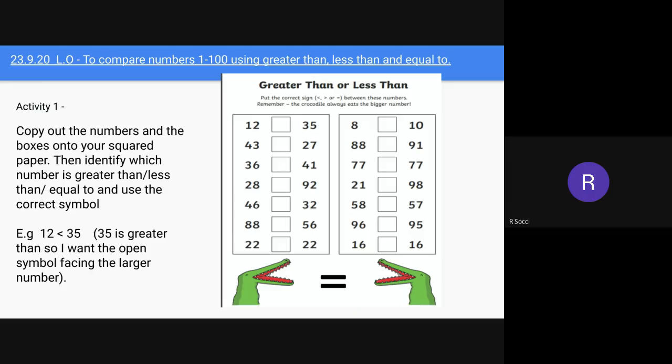What I would like you to do is have a go at this activity. I want you to copy out the numbers and the boxes and put them onto your squared paper. Then I want you to identify which number is greater than, less than, and equal to using the correct symbols. Think about the crocodile's mouth—it always wants to eat the larger number, the greater than number. Another example here on the screen just if you need some extra help.